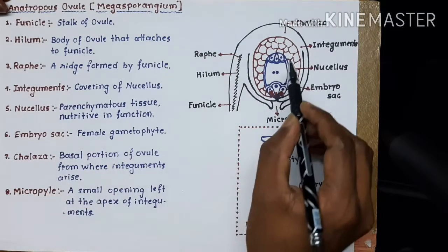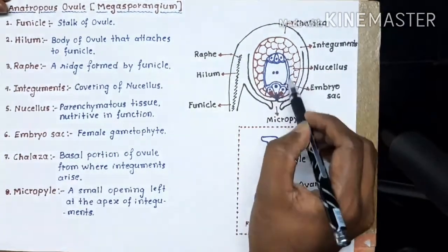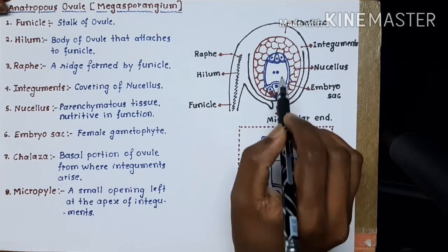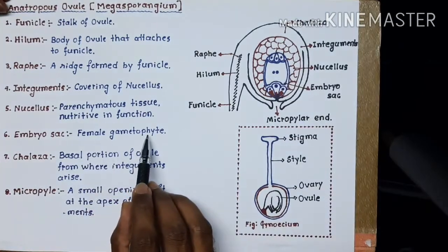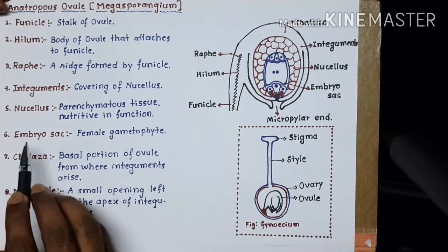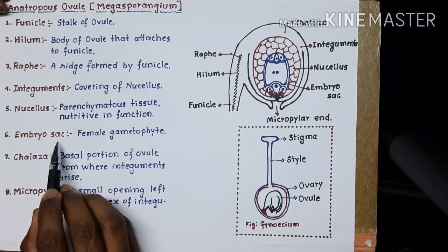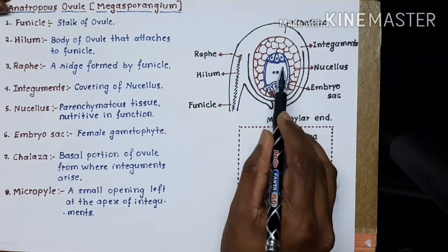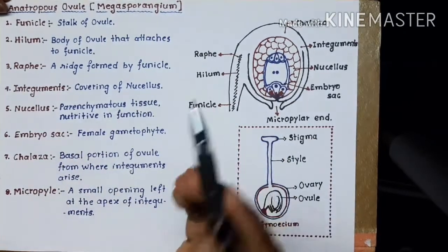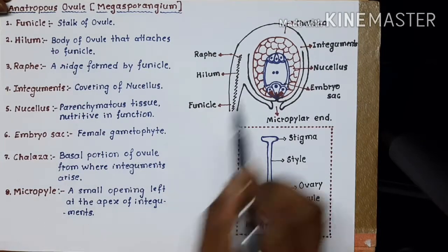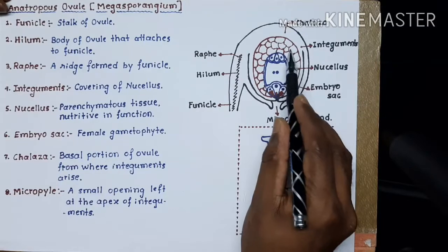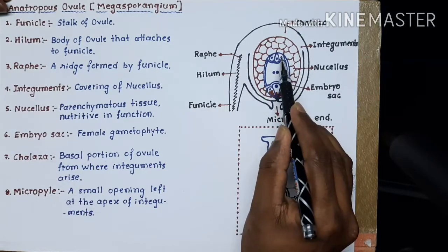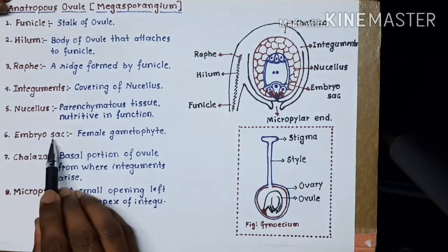Well inside the nucellus there is one more structure which finally gives rise to the egg — the female gamete. Hence, the embryo sac is nothing but a female gametophyte. The embryo sac is also called a megaspore. When you compare this embryo sac with pollen grains, it is larger in size — that's why it is called a megaspore, while pollen grains are smaller in size and are called microspores. So the embryo sac is the female gametophyte present inside the nucellus.